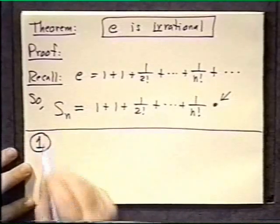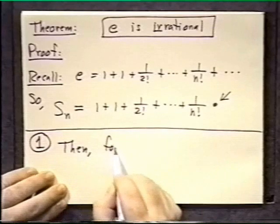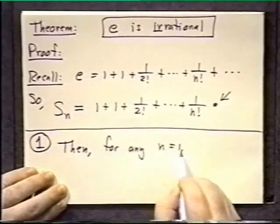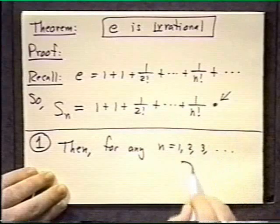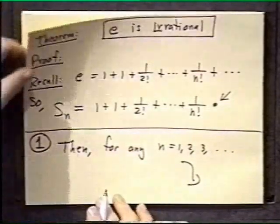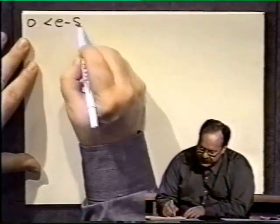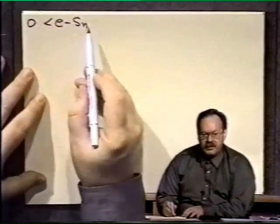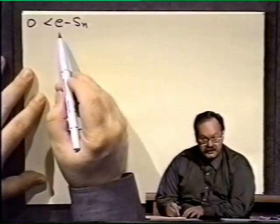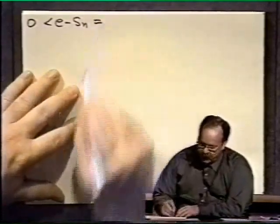So then part one of the proof. Part one of the proof says then for any n, I'm talking about n equal 1, 2, 3, et cetera, we can write the following. And here is the entire argument for this first part. I like this argument. It's really quite nice and it uses the notion of geometric series we talked about. Zero is less than e minus S sub n. Now that's certainly true because S sub n is the partial sum of e, which is the infinite sum. So you take that away, you've got something left. That's positive.